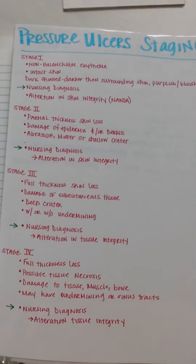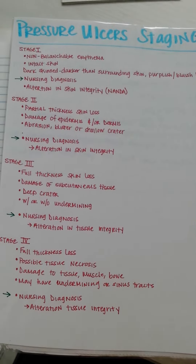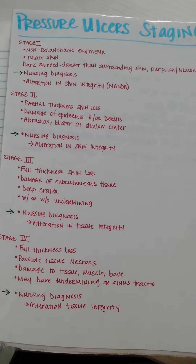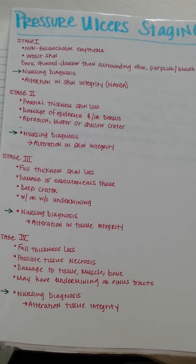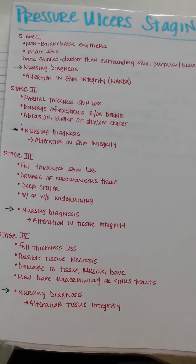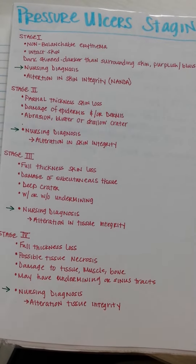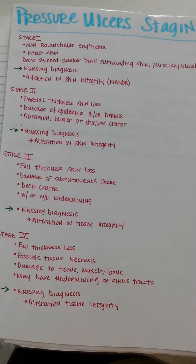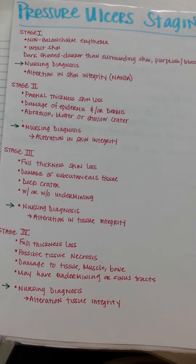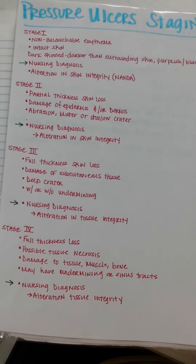Stage 2 is partial thickness skin loss involving the epidermis and the dermis. The ulcer is visible and superficial. It may appear as an abrasion, blister, or shallow crater. Edema persists and the ulcer may become infected, possibly with pain and scant drainage.